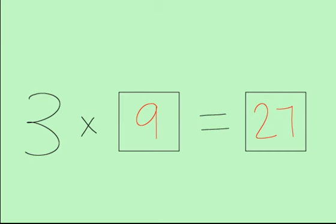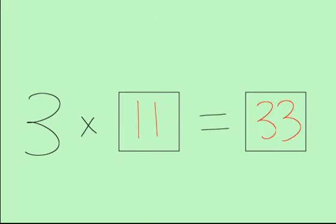3 times 8 equals 24. 3 times 9 equals 27. 3 times 10 equals 30. 3 times 11 equals 33. And 3 times 12 equals 36. Good job!